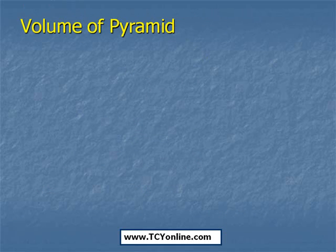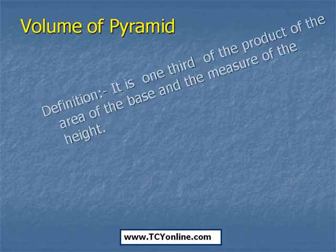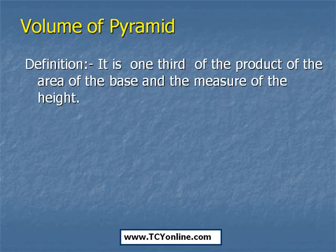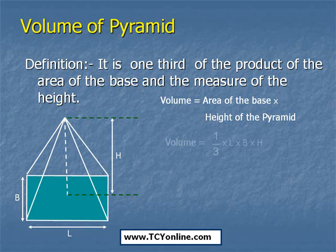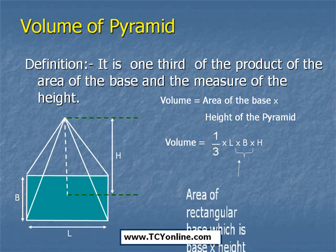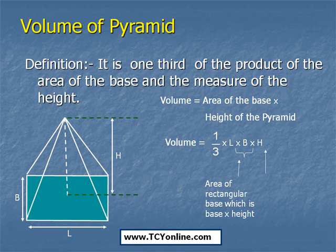Now let's move to pyramids. The volume of a pyramid is basically one-third of the product of the area of the base and the measure of the height. That means the volume of a pyramid is simply 1/3 × l × b × h, where l × b represents the area of a rectangular base, and h represents the height of the pyramid.